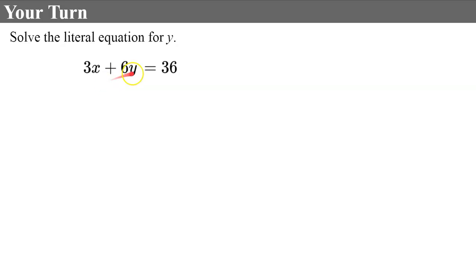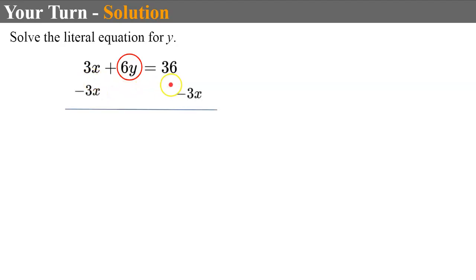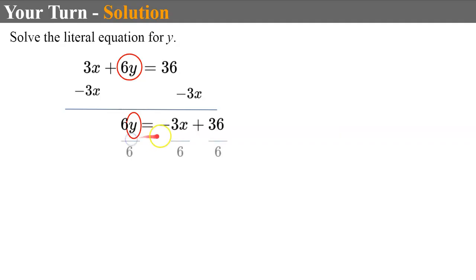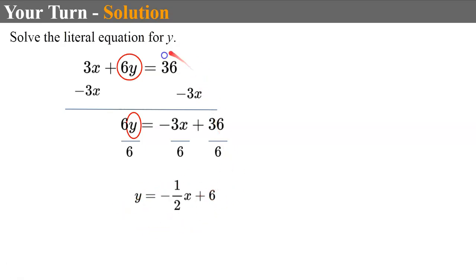Welcome back. Let's see how you did. The first thing I do is identify my variable term — I'm solving for Y. I'm going to use inverse operations and subtract 3X from both sides, bringing down 6Y, which equals -3X + 36. I'm still solving for Y, so I do the inverse of multiplying by 6 and divide every term by 6. Remember — be fair and equal to all terms. So 6 ÷ 6 = 1, leaving me Y; -3 ÷ 6 = -½X; and 36 ÷ 6 = 6. There you have it — the same equation, just now written in slope-intercept form.